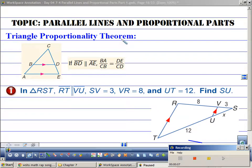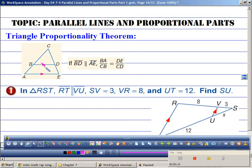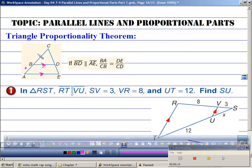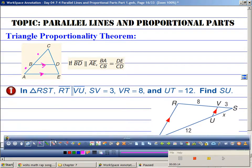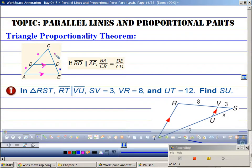Triangle proportionality theorem states that if I have a triangle that has parallel lines like this, then that tells me that this side is proportional with this side is proportional with these two sides. That's what this is stating right here.